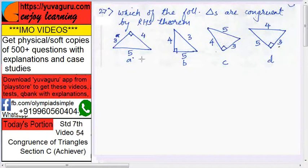Now check A and C. One side is 3, 3. One side is 4, 4. Hypotenuse 5, 5. So that's why A and C are congruent. Very much important is, for RHS, the triangles should be right angles. That is very important condition.